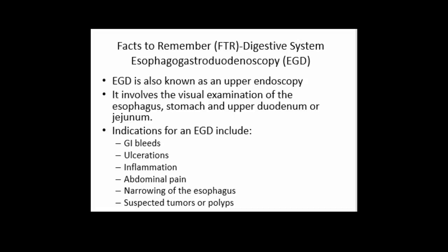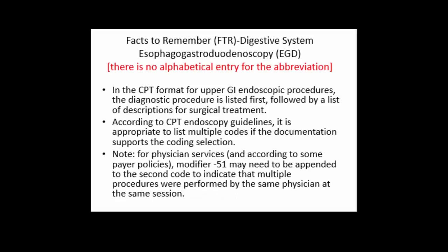EGD is the abbreviation for esophagogastroduodenoscopy. That is an upper GI and involves examination of the esophagus, the stomach, and the upper duodenum or the jejunum. There is no alphabetical entry for EGD in the index — you have to know what EGD stands for. The scope is advanced down the esophagus through the stomach into the duodenum. I've given some guidelines around that procedure.